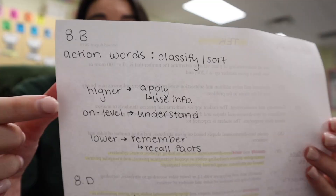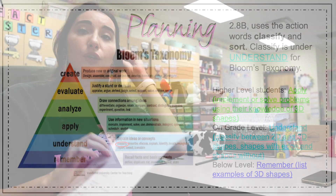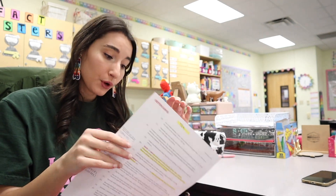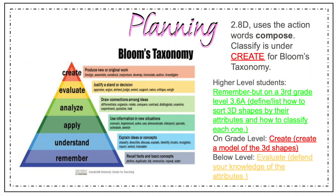I took down the action word, and my on-level was understanding what 3D shapes are and knowing the attributes. A higher level would be to apply, which is using the information in new situations. My lower level is just remembering — recalling facts and basic concepts. That's a good way to differentiate based on your students' needs. For 8.D, it's a higher-level concept because they have to create, which is at the very top of Bloom's taxonomy triangle.